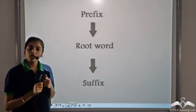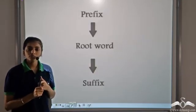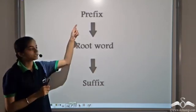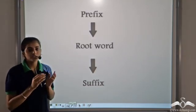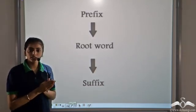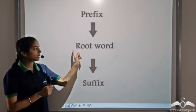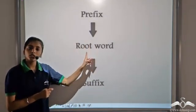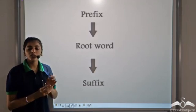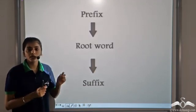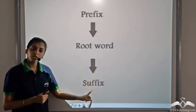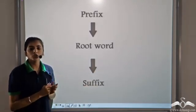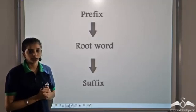While writing the IUPAC name, there are always three parts. The first part is the prefix, which comes from the substituents present in the compound. The second part is the root word, which we get from the number of carbon atoms in the longest carbon chain. And the third part is the suffix, which shows the functional group present in the organic compound.